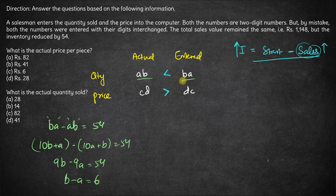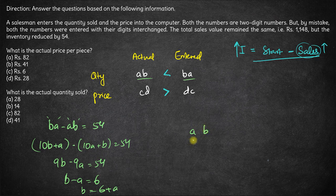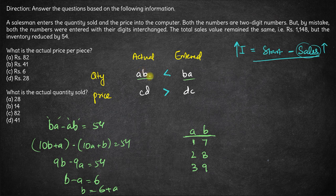So B − A = 6, and AB is a two-digit number, so the least value of A must be 1 — it cannot be 0. From B = 6 + A: if A is 1, B must be 7; if A is 2, B must be 8; if A is 3, B must be 9. If A is 4, then B becomes a two-digit number, which cannot be the case. So the actual quantity sold can be 17, 28, or 39.